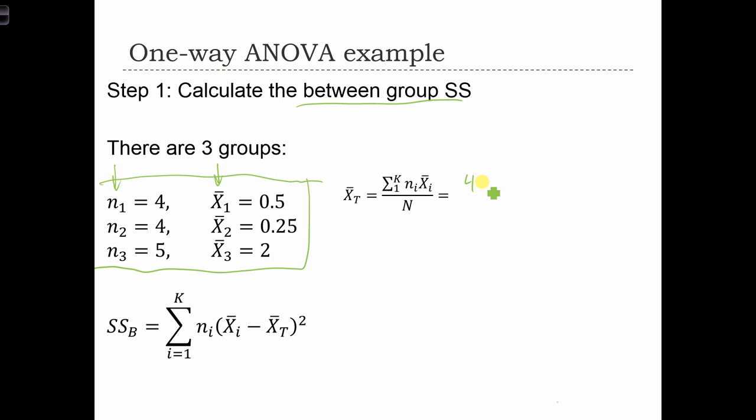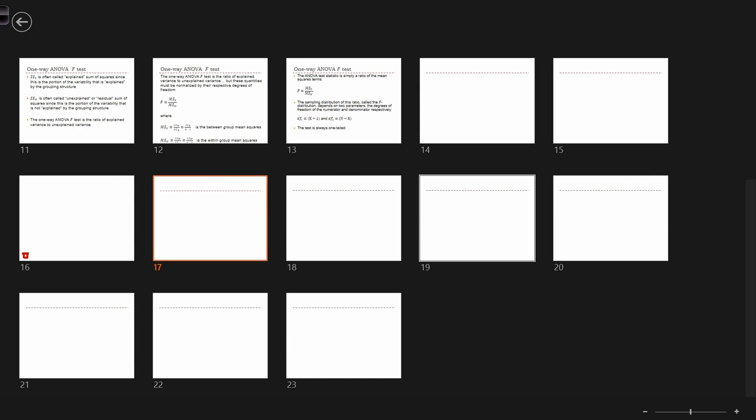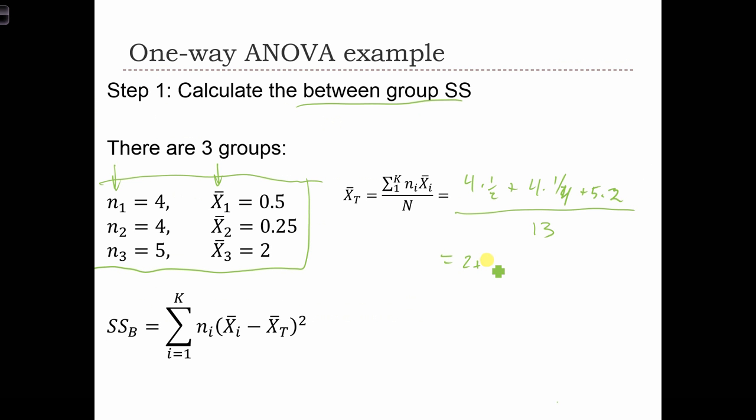The total mean is just the weighted average of the three-group means. So we've got 4 times 1 half plus 4 times 1 quarter plus 5 times 2, all over the total number of observations, which is 13. And this equals 2 plus 1 plus 10 over 13, which just equals 1. So the grand mean or the total mean for this ANOVA test is 1.